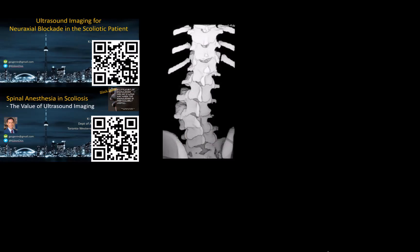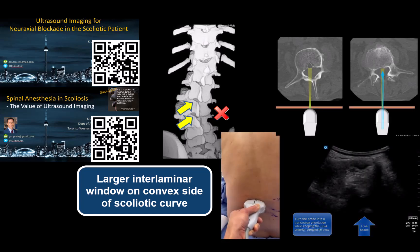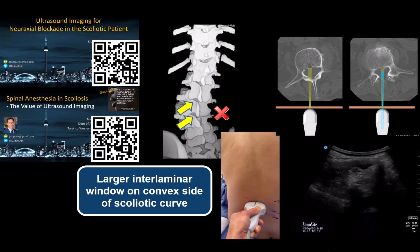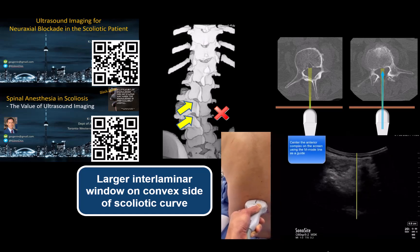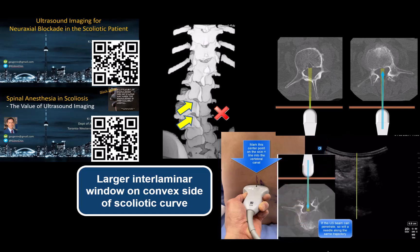The paraspinous approach is also clearly the approach of choice in the presence of scoliosis. It should be combined with pre-procedural ultrasound imaging to identify the direction of spinal rotation and the side that has the widest open spaces. The paraspinous interlaminar spaces are widened on the convex side of the curve and narrowed on the concave side, and the needle should always be inserted on the convex side. There is always a degree of associated rotation, which means that little to no lateral-to-medial angulation may be needed for entry into the vertebral canal.